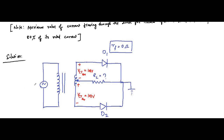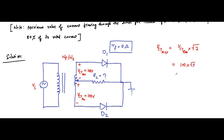The supply voltage turns ratio information is not required since we are already given the center tapped RMS voltage of 100 volts. Now we determine the maximum value: VCT_max equals VCT_rms multiplied by root 2, because for a sinusoidal AC supply the RMS value equals the maximum value divided by root 2. So here it is 100 into root 2 volts.